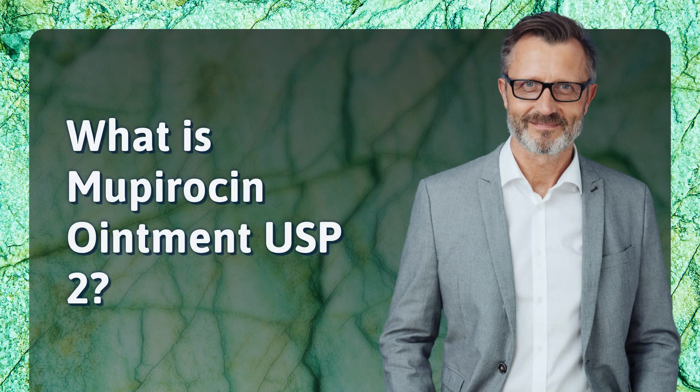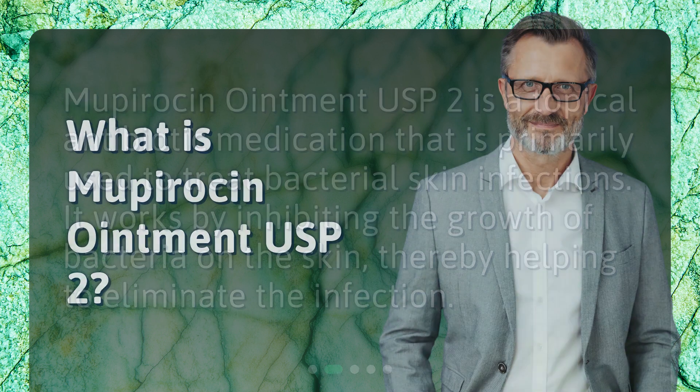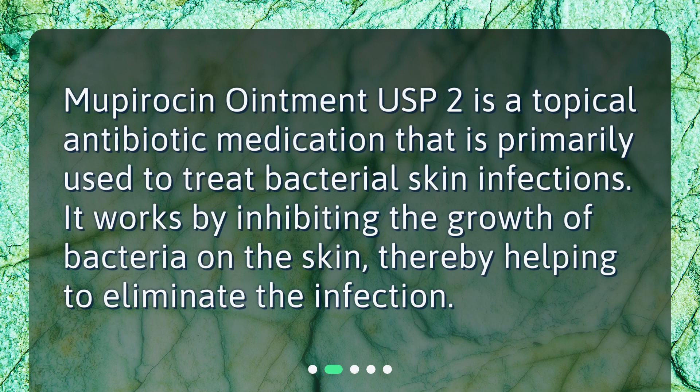What is Mupiracin Ointment USP2? Mupiracin Ointment USP2 is a topical antibiotic medication that is primarily used to treat bacterial skin infections. It works by inhibiting the growth of bacteria on the skin, thereby helping to eliminate the infection.